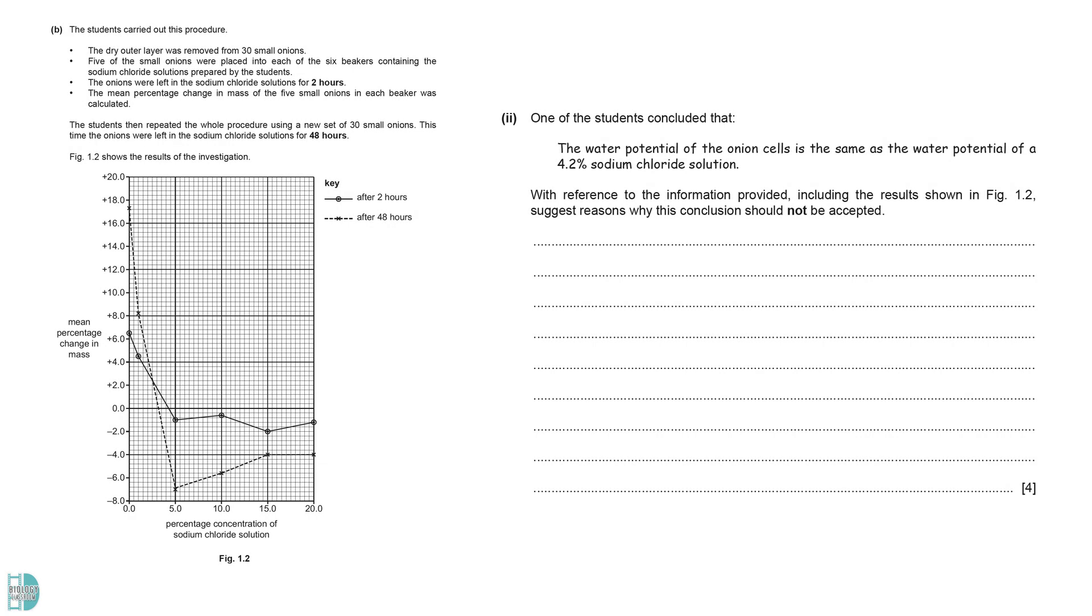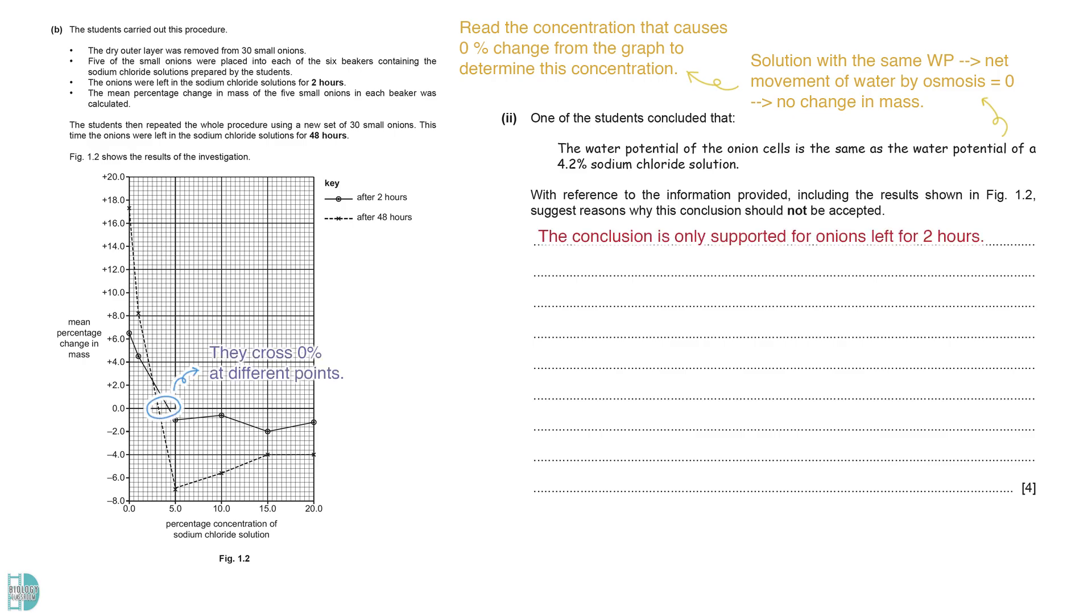Part 2 wants you to suggest reasons why the conclusion cannot be accepted. If the solution has the same water potential as the tissue, the net movement of water by osmosis would be zero. This means the mass of the sample would remain unchanged. We can read the concentration that causes 0% change from the graph to determine this concentration. In the graph, the two lines cross the x-axis at different points. The conclusion is only supported by the onions left for 2 hours. For 48 hours, a 0% change in mass occurs at 3.1% sodium chloride.